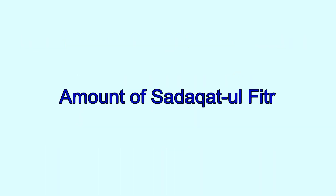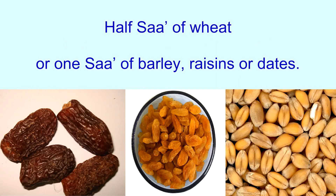And how much is the amount of Sadaqatul Fitr that you are supposed to pay? That is half saa of wheat, or one saa of barley, raisins, or dates. You can also pay the value of these things in cash.